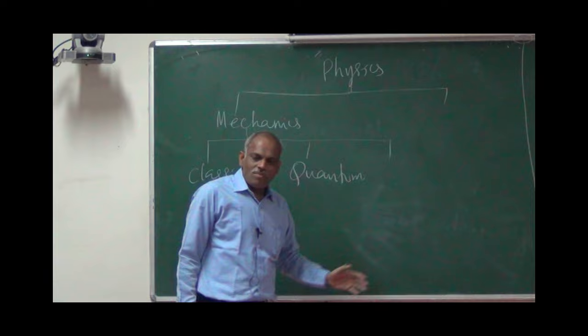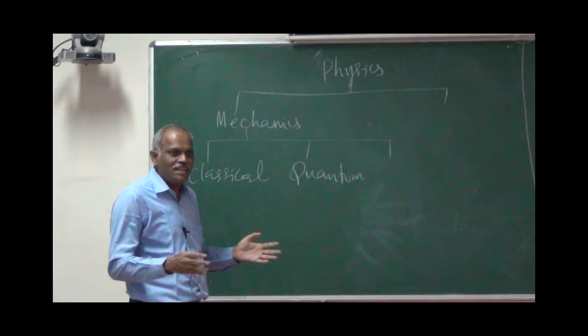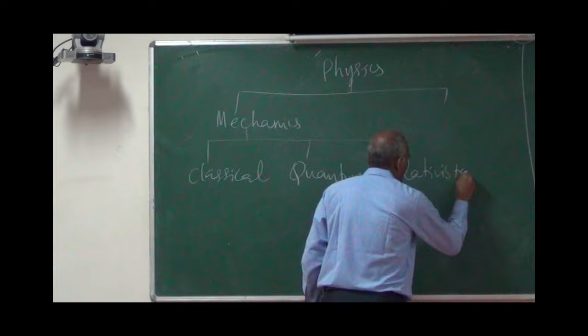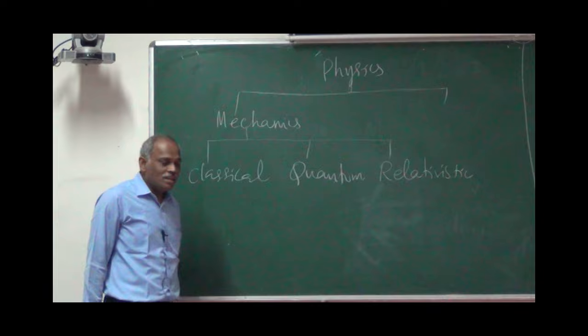Classical Mechanics assumes that energy exists continuously, but Quantum Mechanics says energy can exist only in discrete levels, not in a continuous way. Quantum Mechanics is able to answer certain things that Classical Mechanics could not. Then, when it comes to very high speeds — speeds close to the speed of light — Classical Mechanics also could not answer, so a new kind called Relativistic Mechanics was developed.